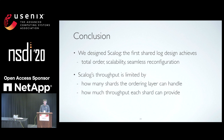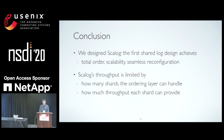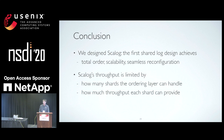To conclude, we have designed ScaleLog, which is the first shared log design providing three key features: total order, scalability, and seamless reconfiguration. ScaleLog's throughput is limited by the number of shards the ordering layer can handle and the throughput each shard can provide. Through emulation, we have shown that ScaleLog can saturate 3,500 shards or 7,000 storage servers. If we had better SSDs or used memory as storage medium, ScaleLog would achieve much higher throughput. Thanks for listening, and I'm happy to take questions.